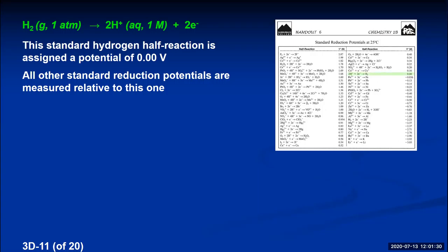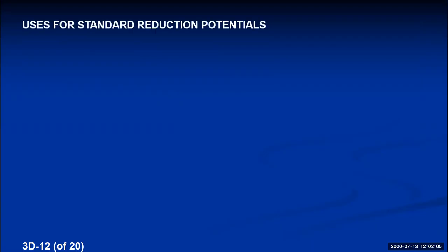On handout 6 on the class website, there's a list of standard reduction potentials — all written as reductions, all calculated by coupling with the hydrogen/H⁺ reaction as the oxidation. The key entry is 2H⁺ + 2e⁻ → H₂ with E° = 0.00 V. Whether written as oxidation or reduction, its potential is zero, and everything else is measured relative to that. There are three uses for these standard reduction potentials: predicting spontaneity, identifying strong oxidizing and reducing agents, and predicting cell potentials.